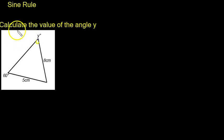This angle here is y. This angle here is 60 degrees. So we can apply the rule and say the sine of 60 over the opposite side, which is 8, is equal to the sine of y, angle y, over the opposite side, which is 5.